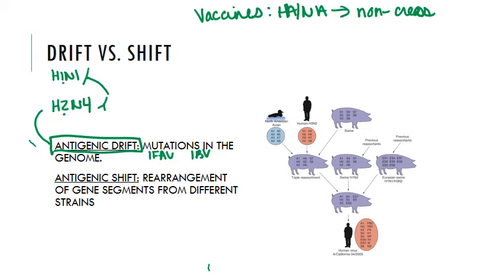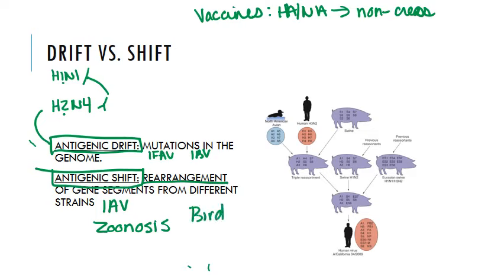When pandemics occur periodically, they result from a concept called antigenic shift — the rearrangement of gene segments from completely different strains of virus. This only happens in influenza A virus, which is a zoonosis. Many of these viruses can be found in animals years before appearing in humans. Because we farm birds and humans spend time among them, there is a chance of infection from birds, which is how we wound up with the H1N1 virus that caused the most recent pandemic in 2009.